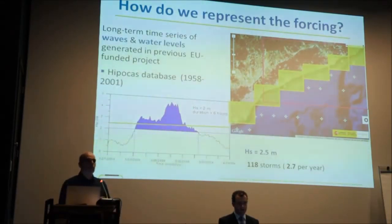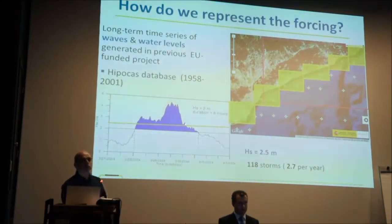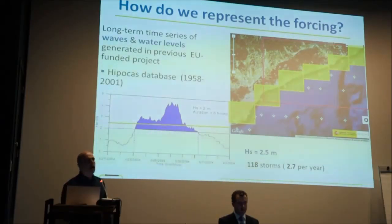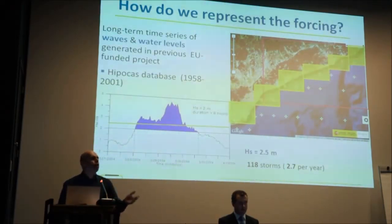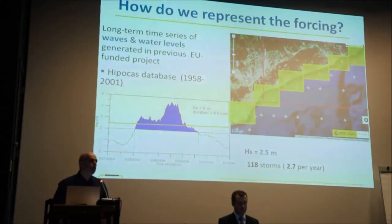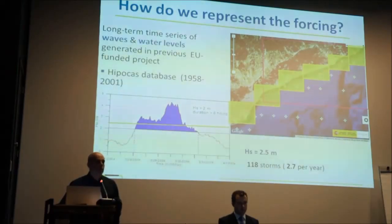In our case, a storm is defined as an event where the significant wave height exceeds a threshold of 2.5 meters during a minimum period of six hours. With this definition applied to the time series, we have about 120 storms to analyze in order to produce the probability distribution of hazard. The tool is good provided that we have good data; otherwise it will not be useful. So we need to use the best data possible.